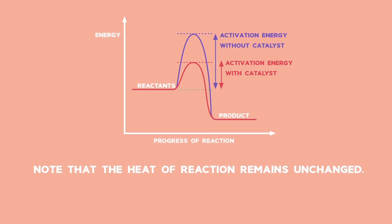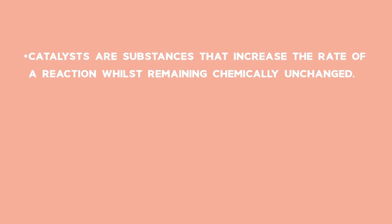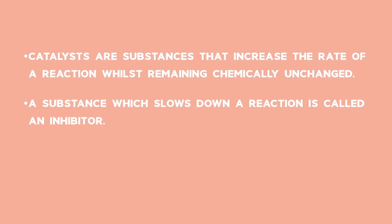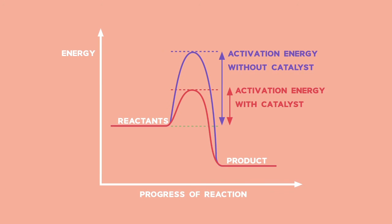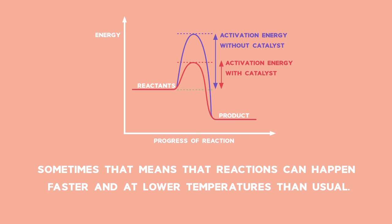The energy profile for a catalyst's reaction is shown in red. Note that the heat of the reaction remains unchanged. Catalysts are substances that increase the rate of a reaction whilst remaining chemically unchanged. A substance which slows down a reaction is called an inhibitor. Catalysts usually work by providing a different reaction route that needs a lower activation energy. The graph illustrates how the activation energy has lowered with the presence of a catalyst. Sometimes that means that reactions can happen faster and at lower temperatures than usual.